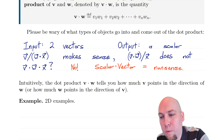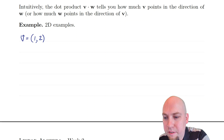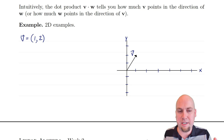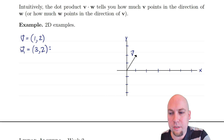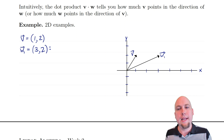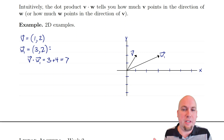Let's do a couple quick examples of computing the dot product. Suppose we've got the vector [1, 2] — pointing one unit to the right and two units up — and we take its dot product with the vector [3, 2]. Going through the formula: you multiply the first entries to get 3, multiply the second entries to get 4, and add those up to get 7. So the dot product between these two vectors is 7.